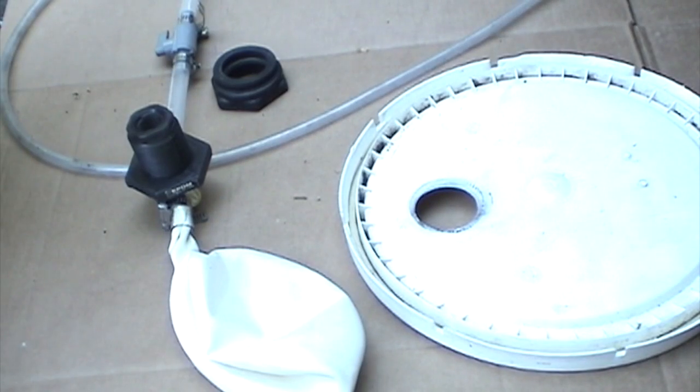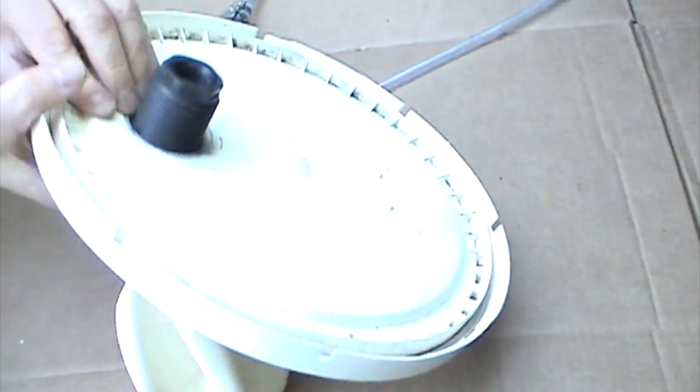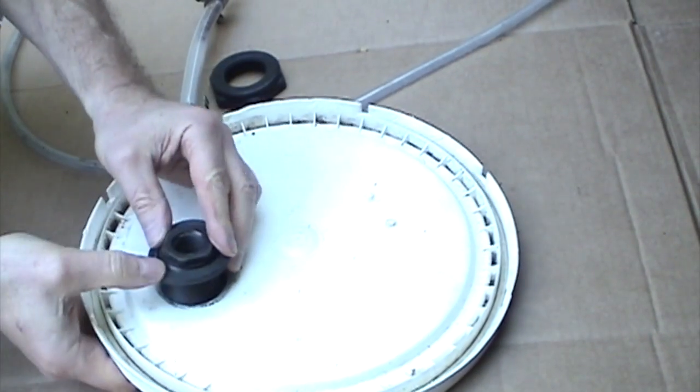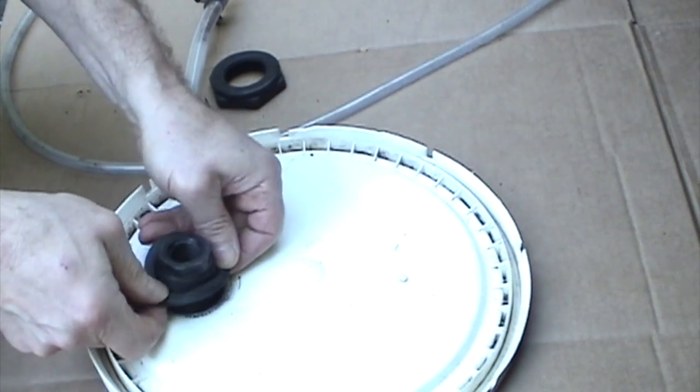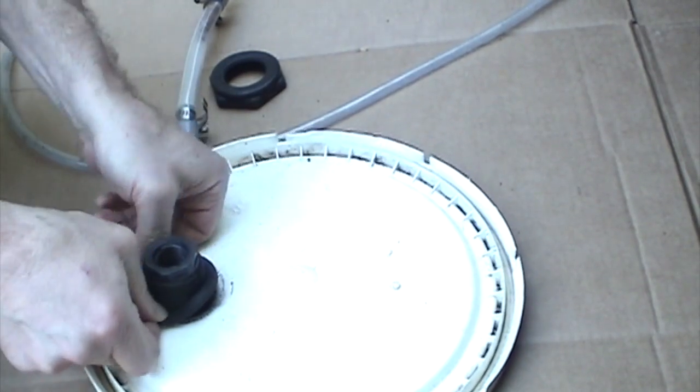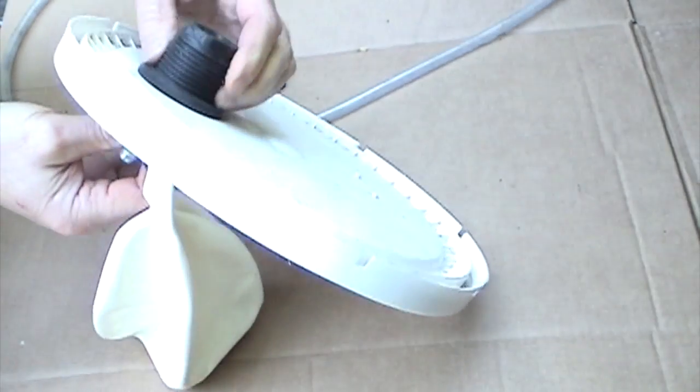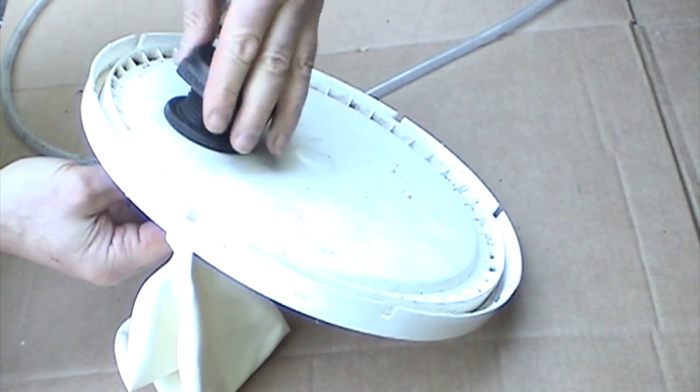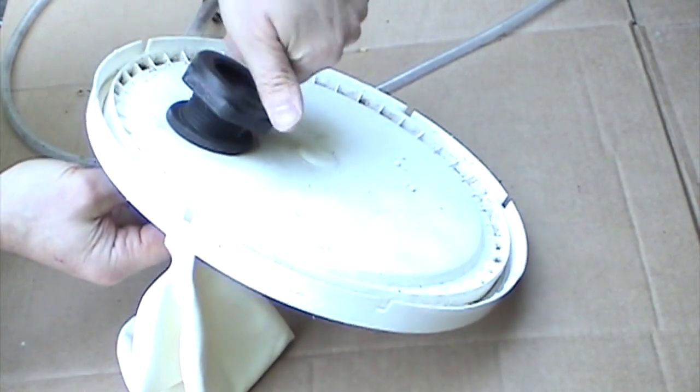Okay, the final step is to put the bulkhead fitting into the bucket lid. Gasket goes on the inside, and this is a reverse thread.